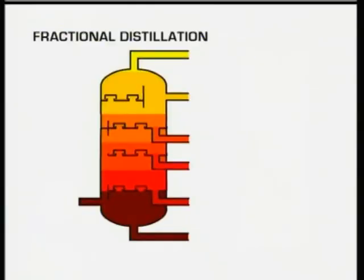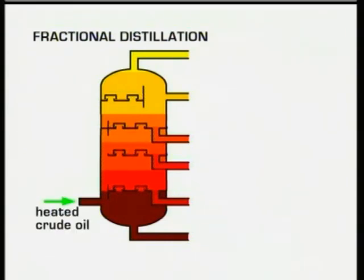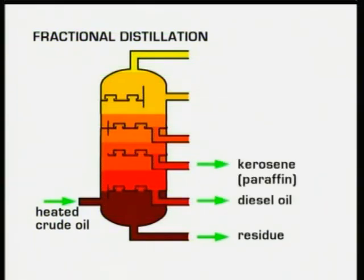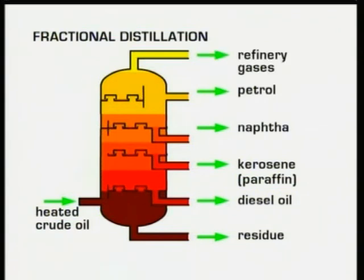Fractional distillation separates crude oil into different hydrocarbon fractions according to the different numbers of carbon atoms they have. Different numbers of carbon atoms give them different boiling points, so the different fractions condense out at different points of the fractionating column.